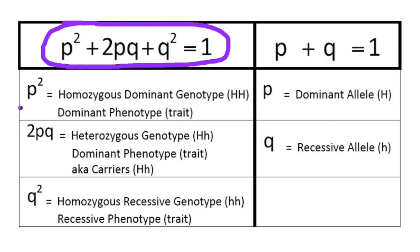So first we have p², which represents the homozygous dominant genotype or the dominant phenotype that may be given in a word problem. Then we have 2pq, which represents the heterozygous genotype, which is also a dominant phenotype, or it can represent the carriers that may be given in a word problem. And then we have q², which represents the homozygous recessive genotype, which is also the recessive phenotype.